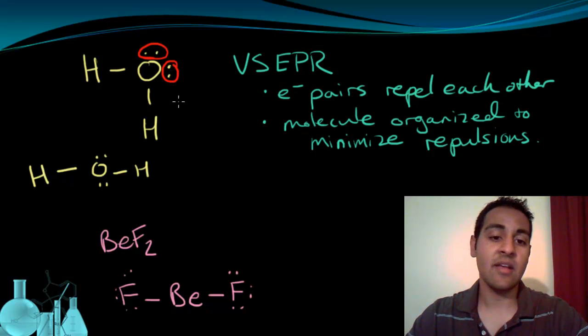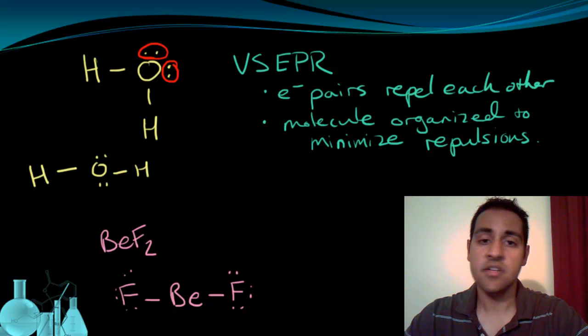You can think about it as the lone pairs of electrons pushing those hydrogen atoms down, pushing those bonds away to form that bent shape. So that's another thing we can say for VSEPR: that lone pair electrons exhibit a stronger repulsion than electrons in bonds. And that's going to affect the geometry of any molecule that has a lone pair in it.